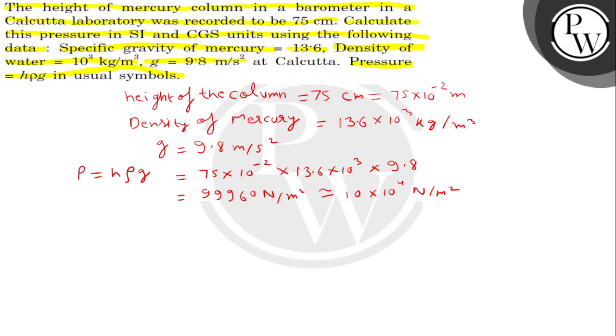In CGS, height हम centimeter में ही रखेंगे, 75 centimeter हो जाएगा. Density हमारी gram per centimeter cube होगी, so density of mercury कितनी हो जाएगी 13.6 gram per centimeter cube.